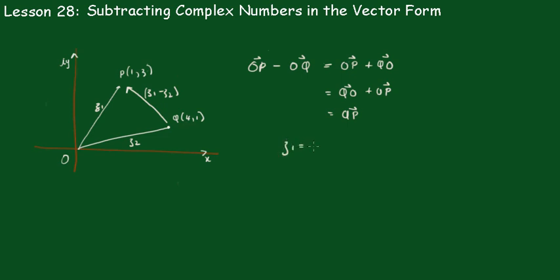Z1 is equal to 1 plus 3i, and Z2 equals 4 plus i. So Z1 minus Z2 is going to be minus 3 plus 2i.